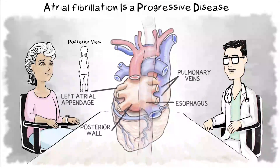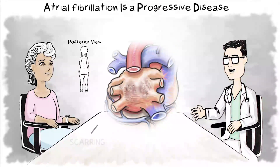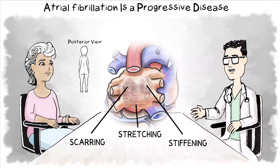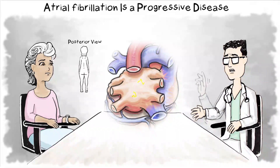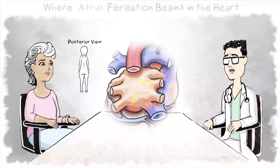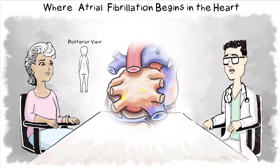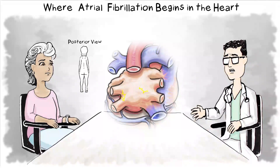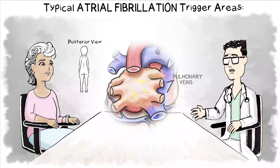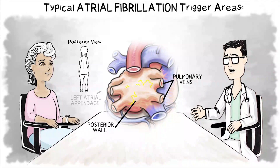Untreated atrial fibrillation can grow worse over time and possibly damage the heart tissue. Atrial fibrillation increases the risk of stroke by five times. The erratic electrical signals that cause atrial fibrillation often begin in the left atrium. These trigger points can include the base of the pulmonary veins, the posterior wall or back of the heart wall, and the left atrial appendage.